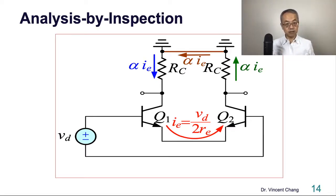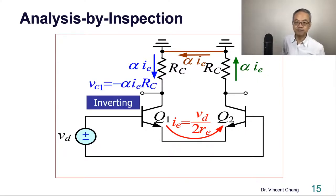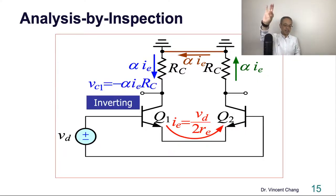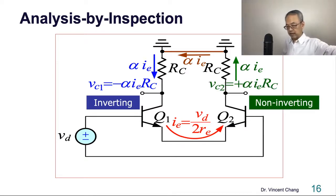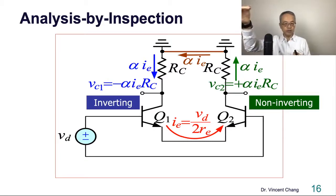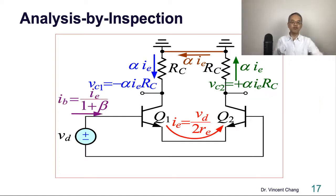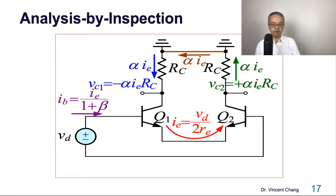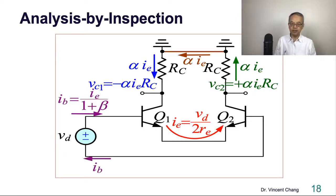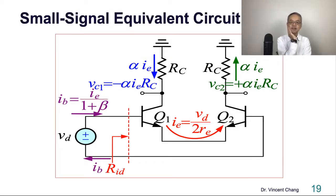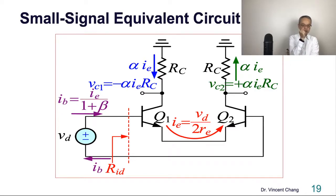Clockwise will be out of phase. Then you get the AC output voltage on the left side and also AC output voltage on the right side. The negative means the inverting output VC1, and positive means the non-inverting output. Once you have the emitter current, you can get the base current divided by one plus beta. This completes the analysis by inspection.